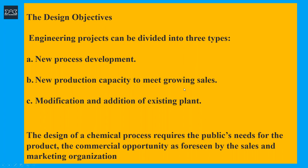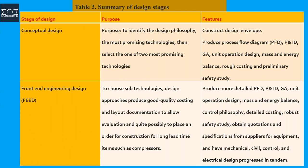In design objectives, we need to understand the development and modification of an existing plant and know what is required. There are design features — the purpose, the design summary — which will involve the process flow diagram, the P&ID, the mass and energy balance, and obtaining quotations. This will relate to the various other departments: instruments, mechanical, civil, and electrical.